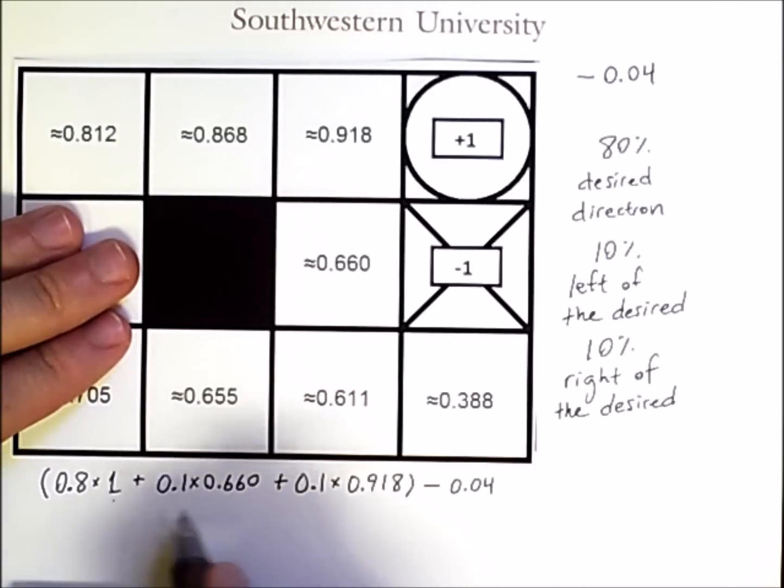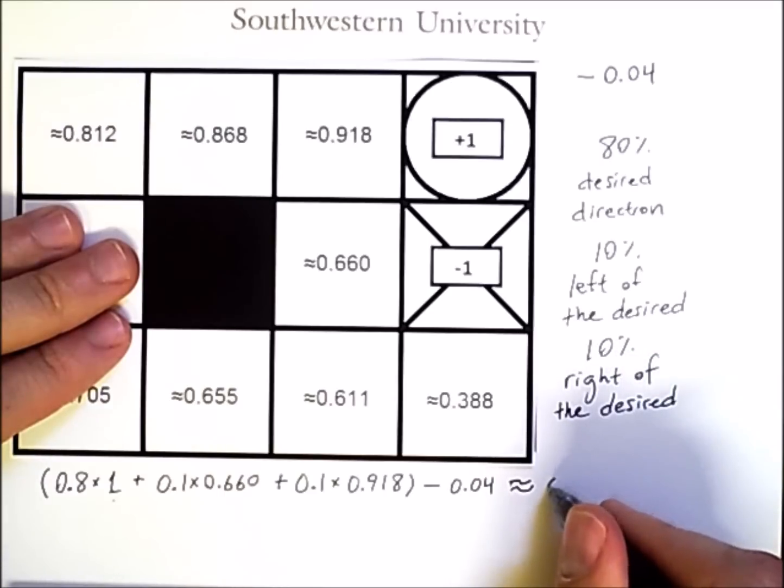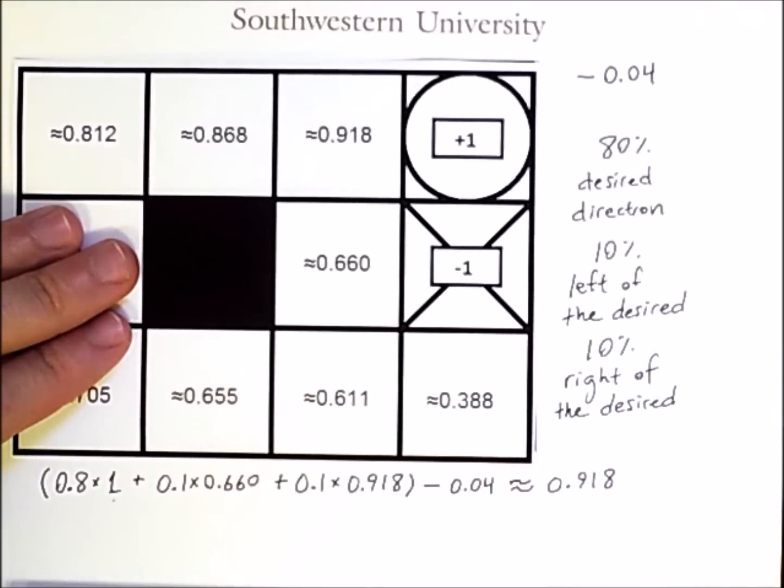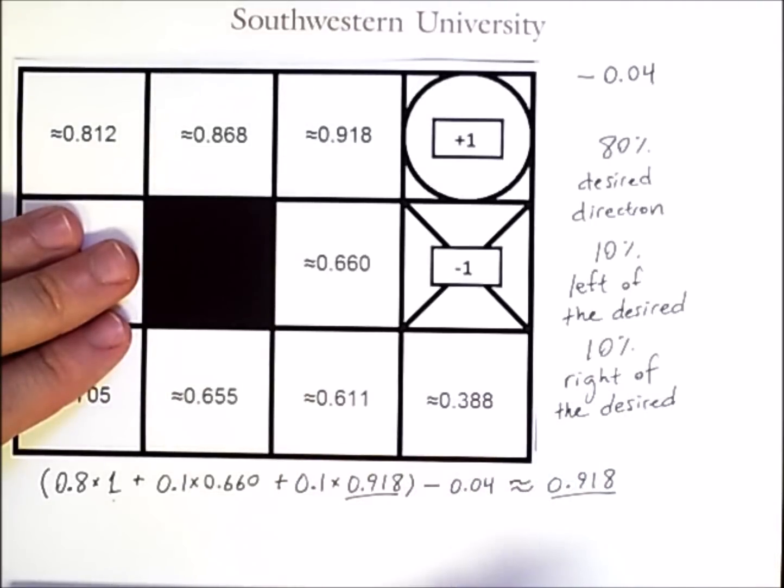So if you calculate this result, it will come out approximately to 0.918. Of course, to calculate this result, we actually already had to know this result. It's defined in terms of itself.